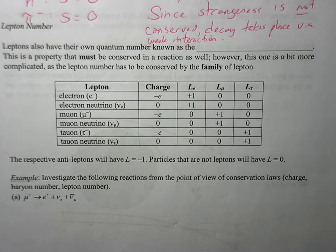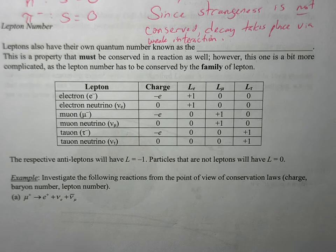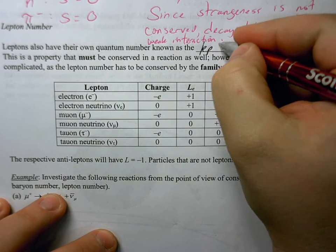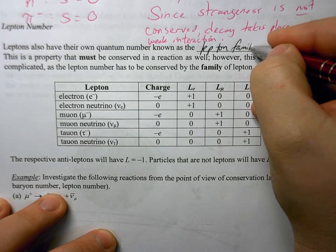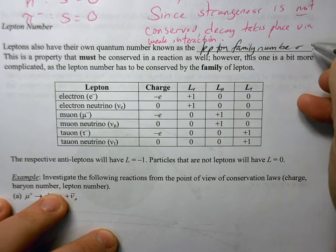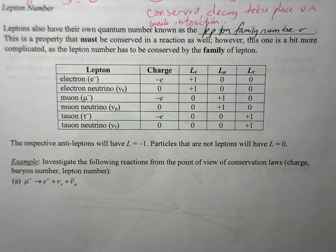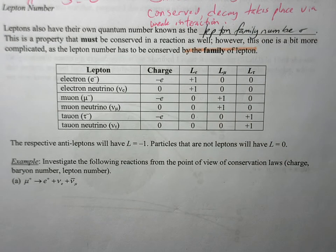The last conservation law in IB particle physics is the conservation of lepton number. This is the one students least prefer, just because the amount of work that goes into it is quite significant. Leptons have their own quantum number, kind of like the strangeness number and baryon number — it's called the lepton family number. This one's a little bit different; it has to be conserved by the family of lepton, not just the number itself.